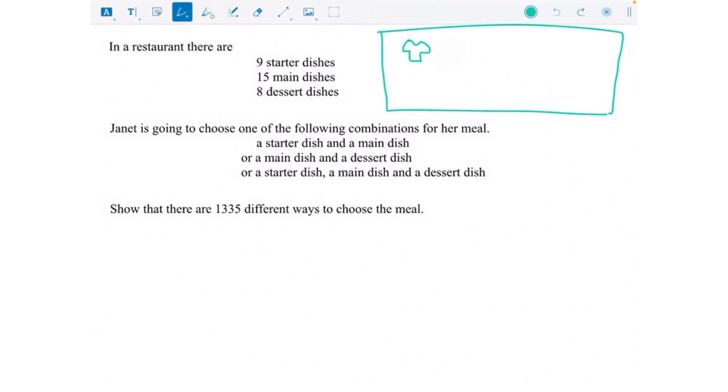Looking at this question, it says there are nine starter dishes, fifteen main dishes, and eight dessert dishes. Janet is going to choose one of the following combinations for her meal: she's either going to choose a starter and a main, or a main and a dessert.